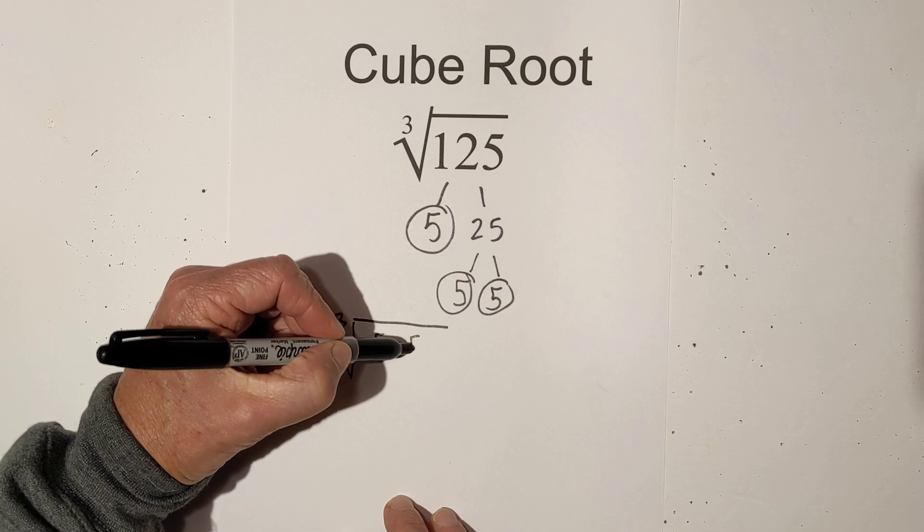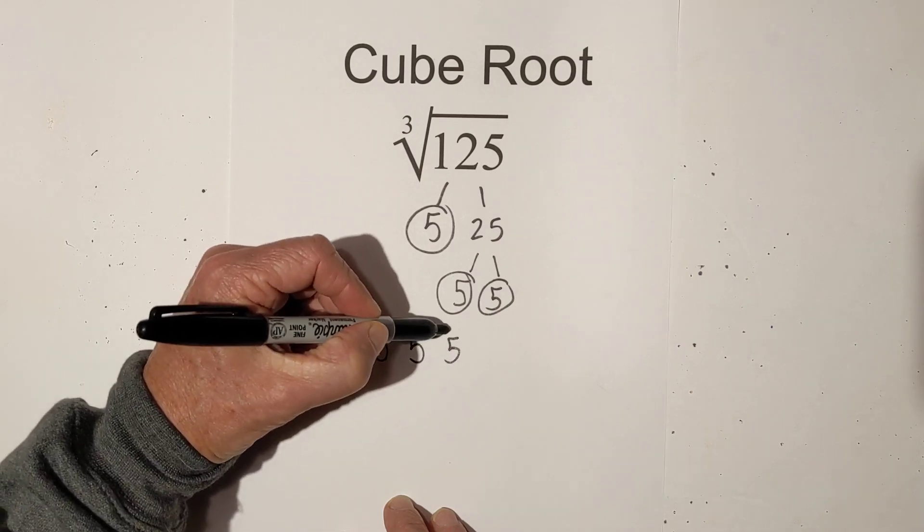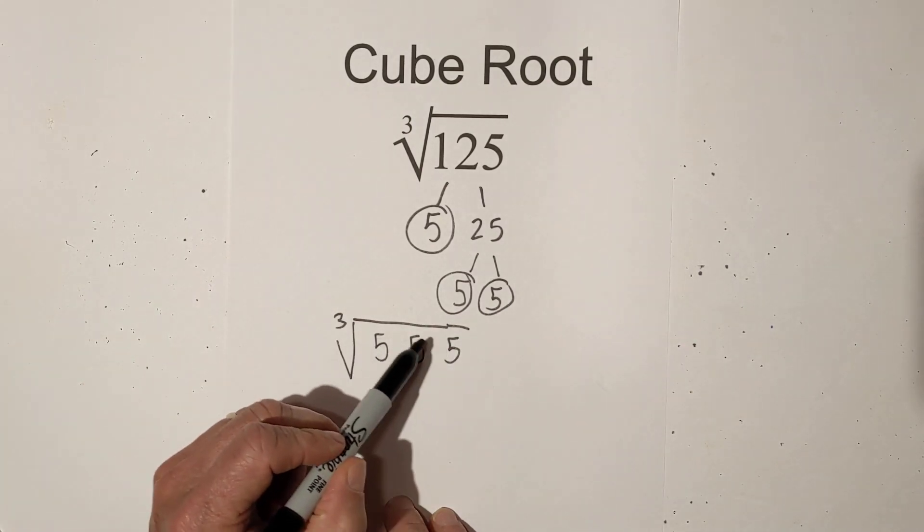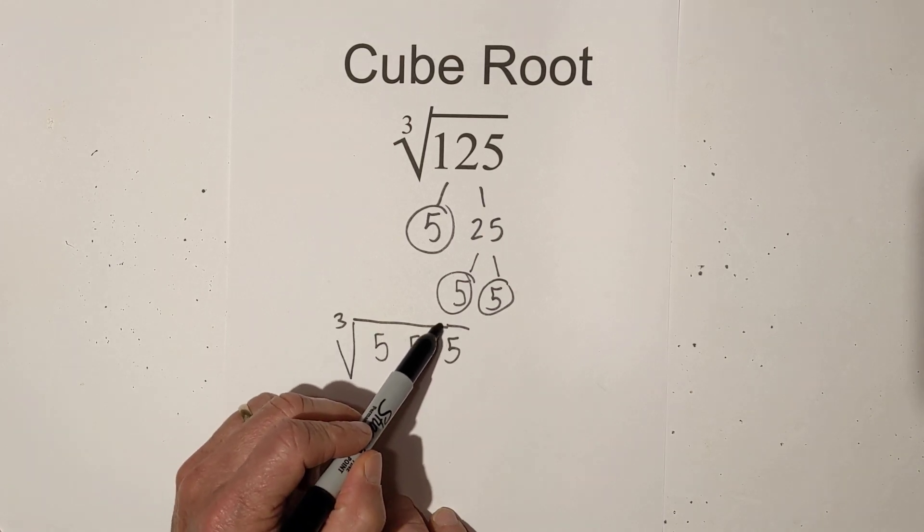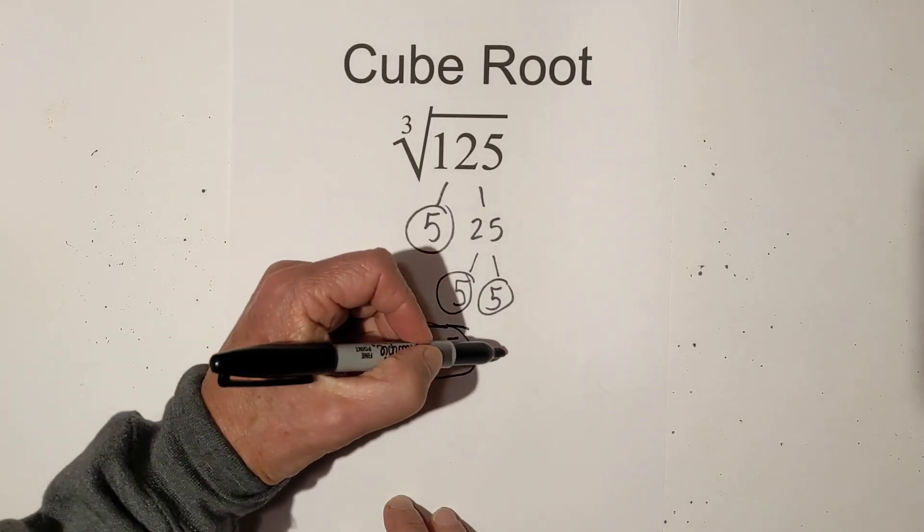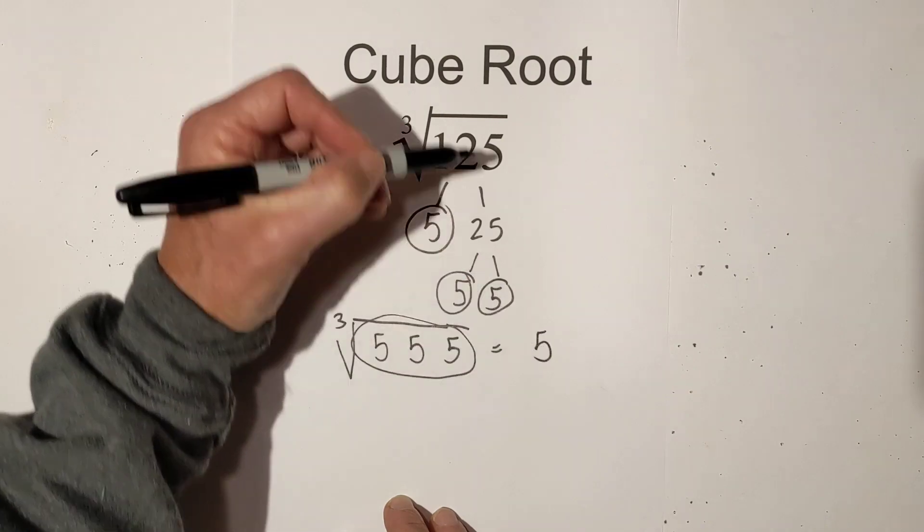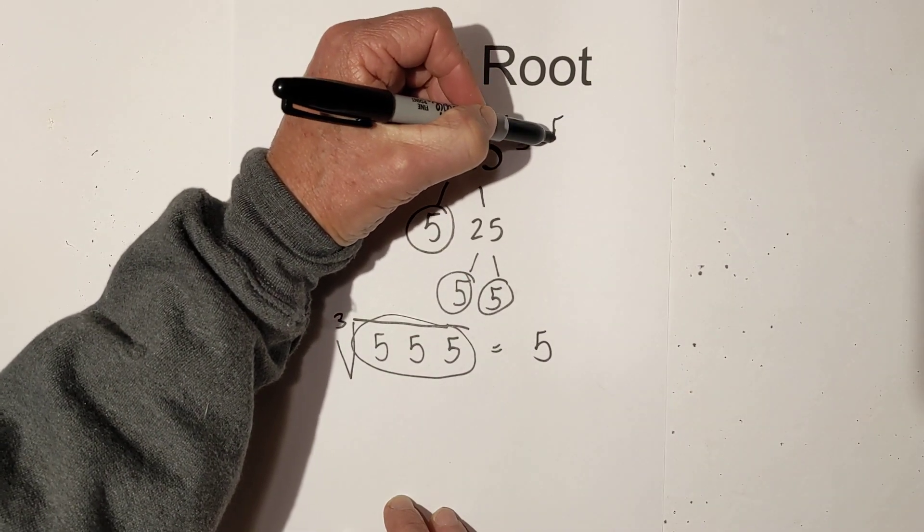So that is 5, 5, and 5. The rule is if you have groups of 3 you can pull them out from under that. So the cube root of 125 is 5.